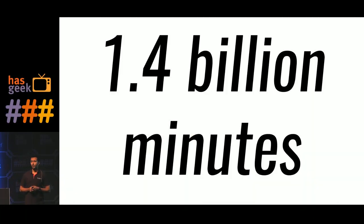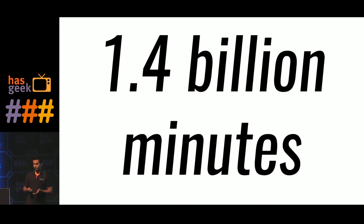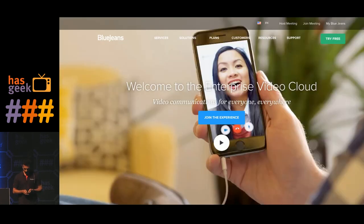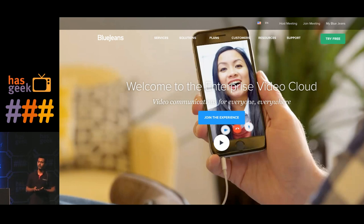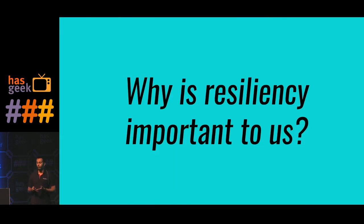A bit about BlueJeans. To date, we've done about 1.4 billion minutes of video conferencing. What that means is for the past five-plus years, for every minute of the day, we've done 500 minutes of video across the globe. So quite naturally, uptime is our number one priority. Our users make use of the BlueJeans service across mobile phones, iPads, tablets, desktops, and existing room systems, and we want to make sure every time they have a video conference, they have the best experience. Thus, resiliency of our system is really important to us.